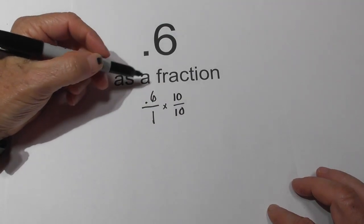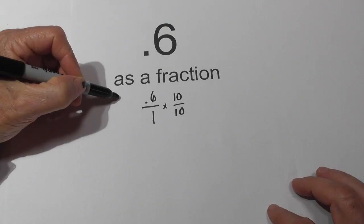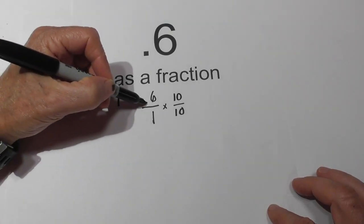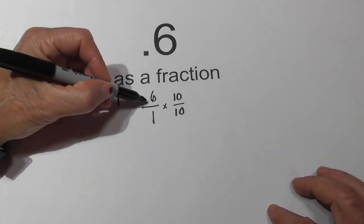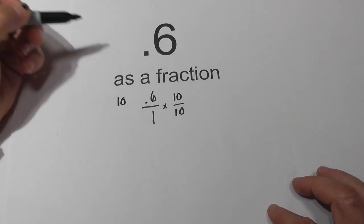Another way that you can do this is just write a 1 and then add a 0 for the number of numbers that are to the right of the decimal. So in this case you have one number to the right so it would be 10.